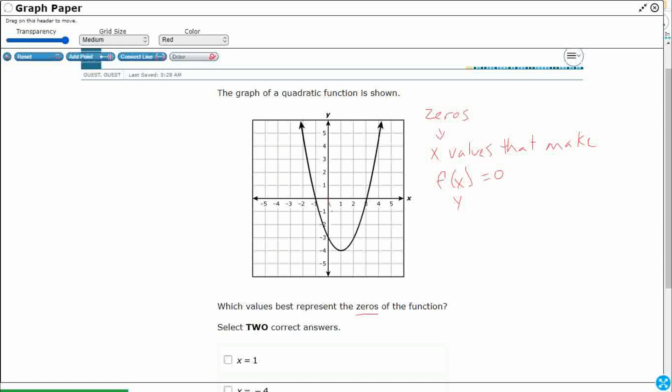Now, we've got some synonyms here. So zeros are also going to be called solutions. That's a similar term. And then I think the easiest thing to call them is going to be our x-intercepts.